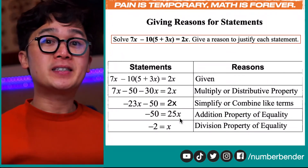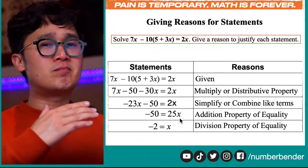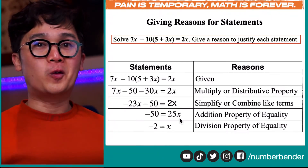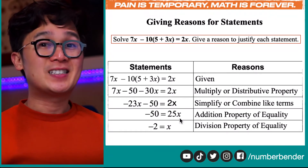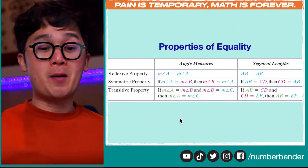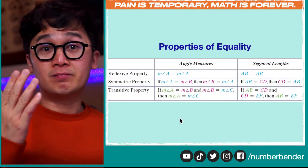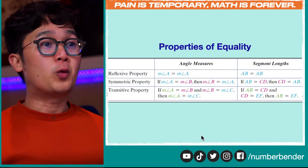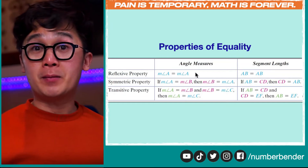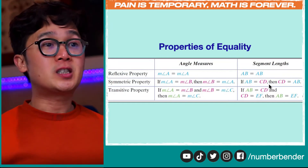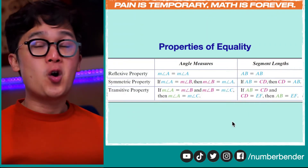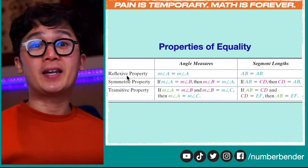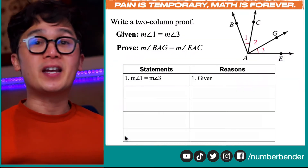Now we're moving on to more challenging steps using geometry. We're going to use the properties of equality in angles: the reflexive property, symmetric property, and transitive property, which state relationships between angle measures given by A, B, or C — their corresponding segment lengths or results using these properties. Let's look at how we use these properties in a geometry problem.